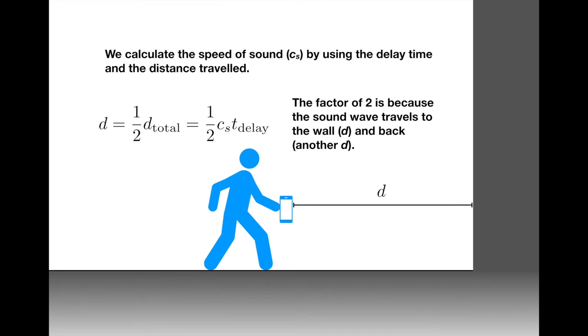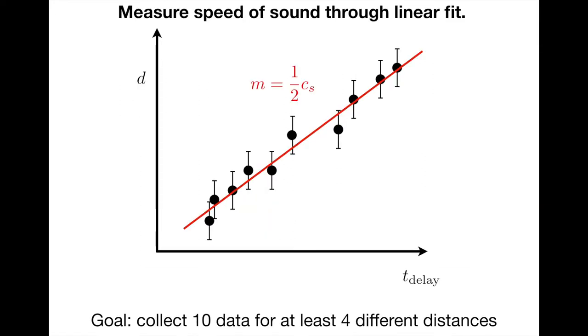We will measure the speed of sound using a kinematic analysis. We note that the distance to the wall is actually half the total distance that the sound wave travels—it goes to the wall and then comes back again. That total distance is just the speed of sound times the delay time between when the pulse is transmitted and when it's received. So the distance from the wall ends up being half of the speed of sound times the delay time.